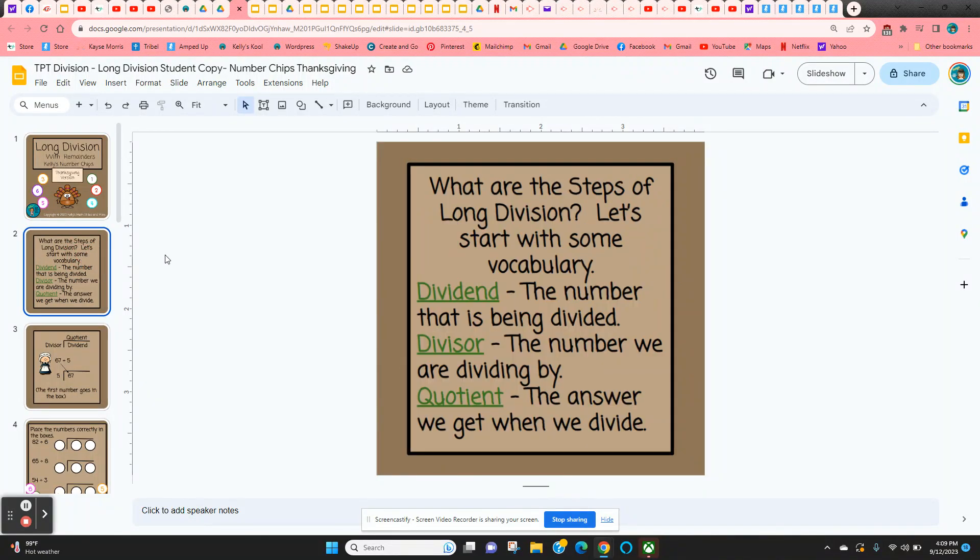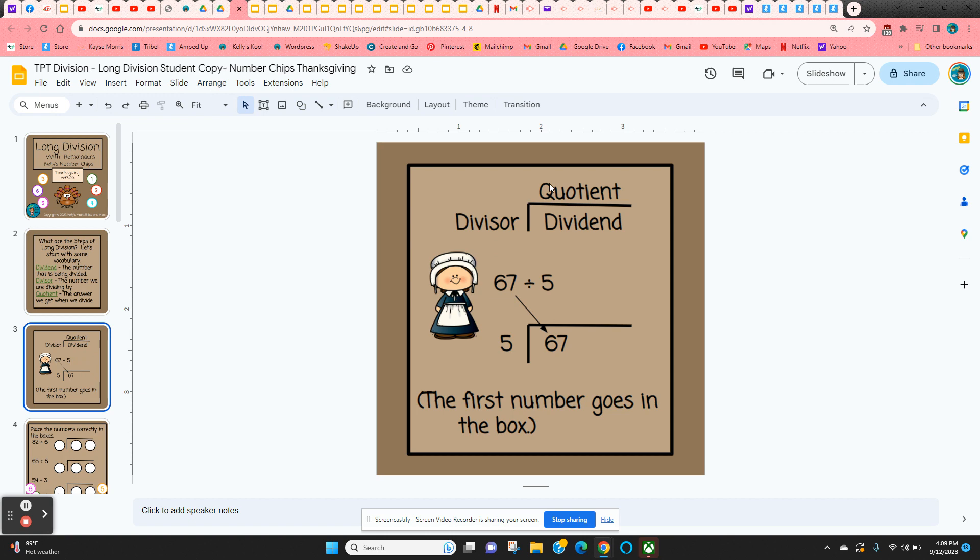So it starts out with just a definition of dividend, divisor, and quotient. And then it shows students where those terms are in the division problem. So here we have 67 divided by 5. 67 is the dividend, goes in the box. And the 5 is the divisor, goes outside the box.